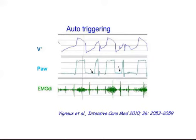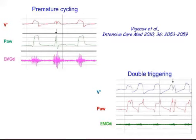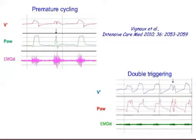An example of premature cycling shows the ventilator cycling into expiration before the end of neural inspiratory time. On the tracing without EMG, this can be seen as a short pressurization cycle compared to a normal non-premature cycling. Double triggering — seen on the lower part of the slide — means that for one inspiratory effort by the patient, there is first a too-rapid cycling followed by another triggering of the ventilator, easily identified by the typical twin-peaked pressure tracing.